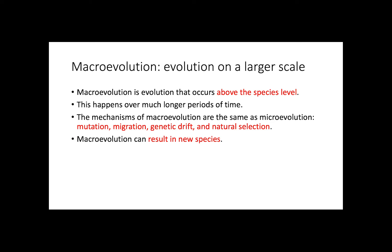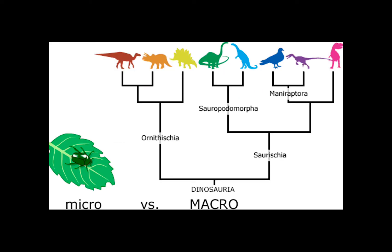Macroevolution can result in new species. For example, the beetle on the left can undergo many microevolutionary changes including change in color, food preference, mating behavior, or any change that can evolve the species. Our phylogenetic tree on the right starts with a common ancestor followed by many speciation events to give rise to all of the species at the end of the tree. This shows us macroevolution versus microevolution.